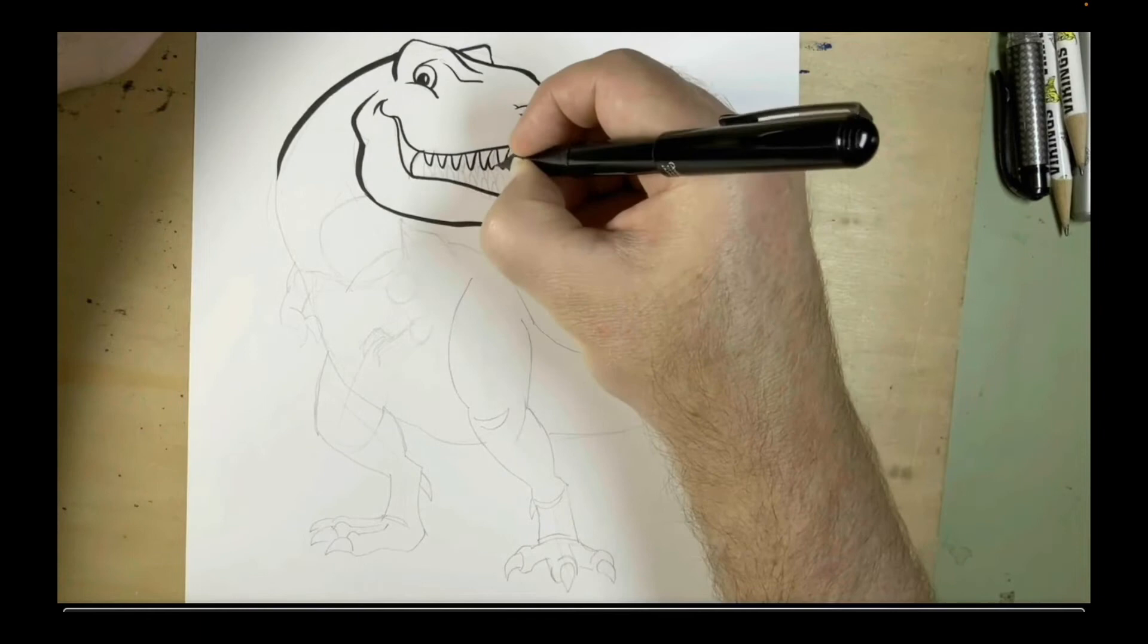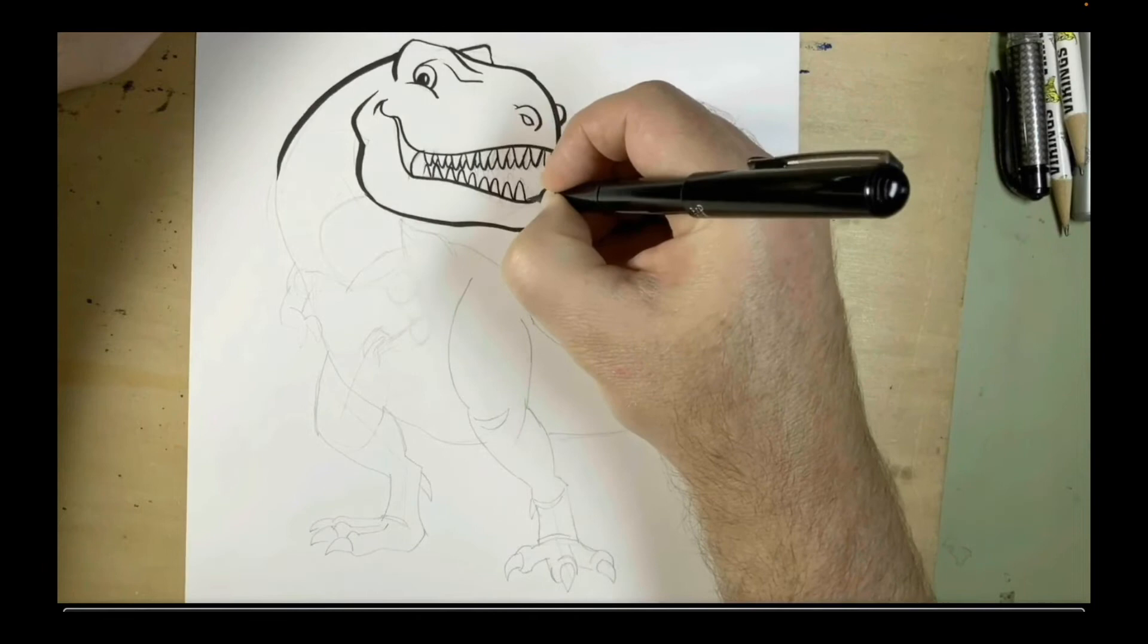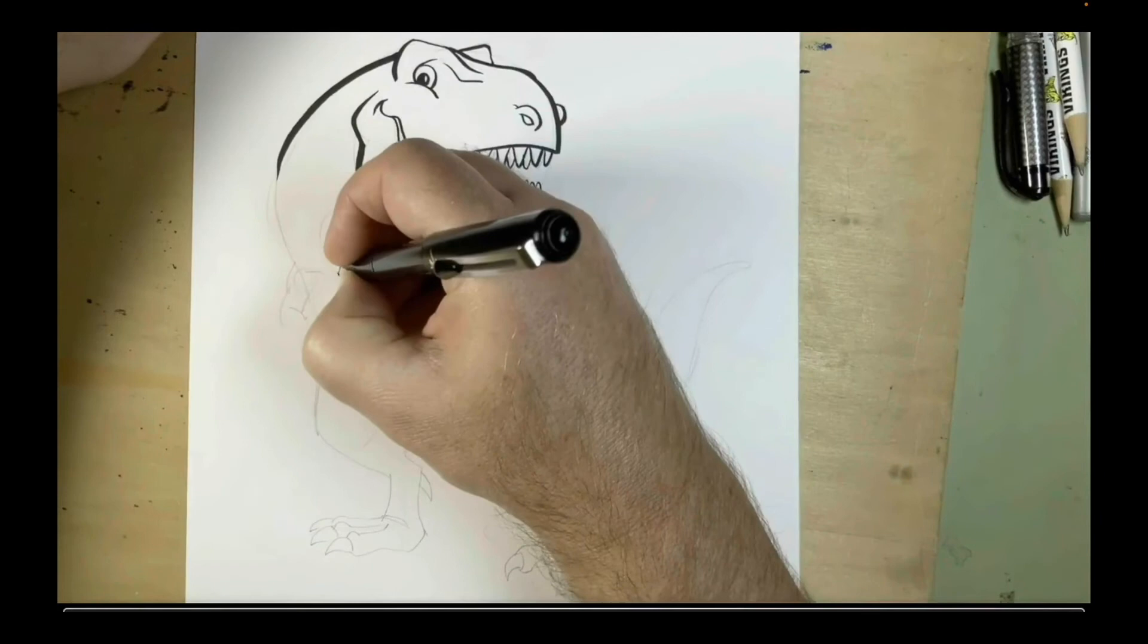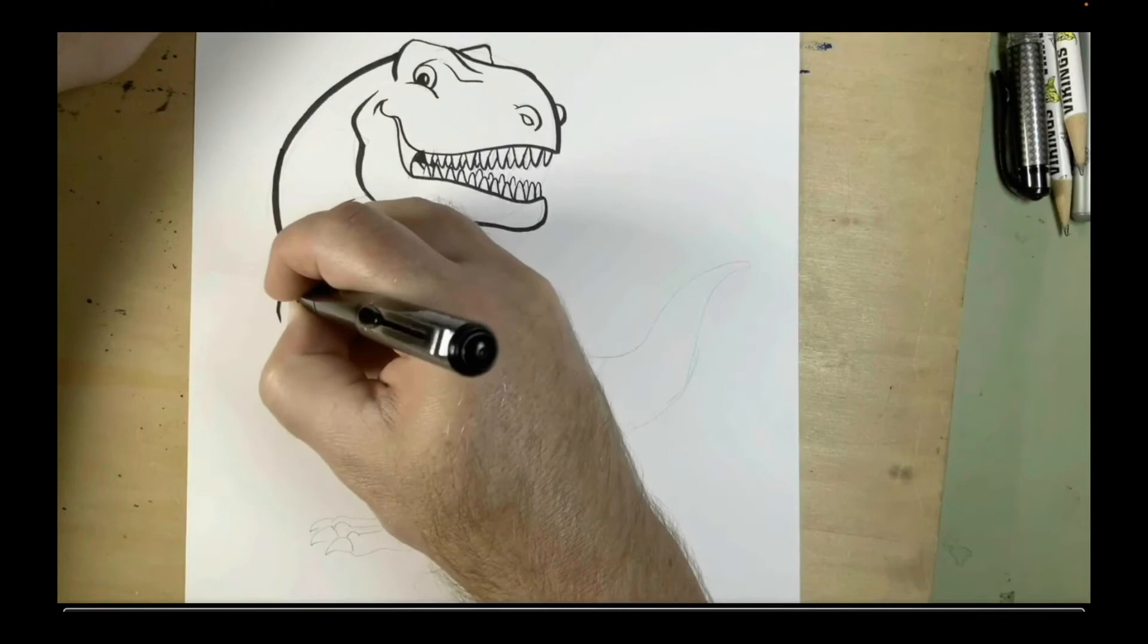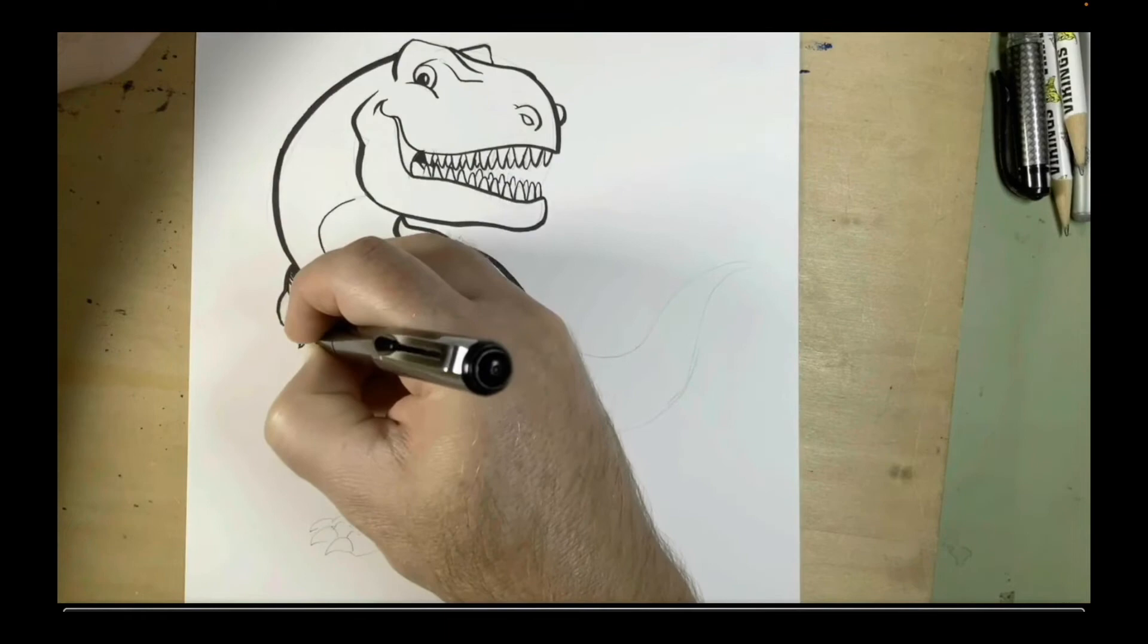The key to getting a good line quality and actually having success in using a brush is that you have to pull the brush, you don't push the brush. If you pushed your hand towards the bristles and made a line that way, you would get the bristles to spread out and that would make a blob and that would be a bad thing. But if you drag the bristles behind your hand, that's the formula for success on how to use this.